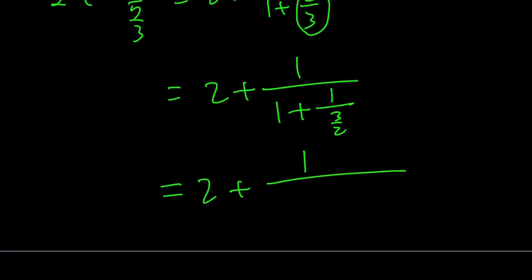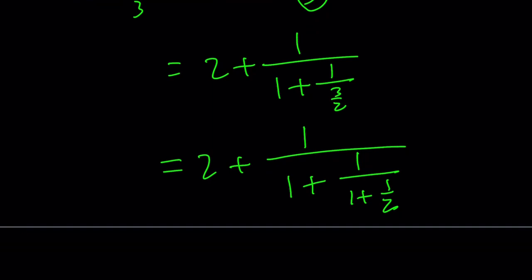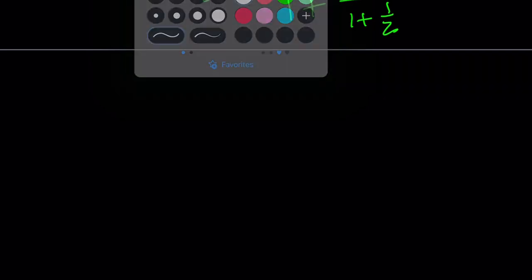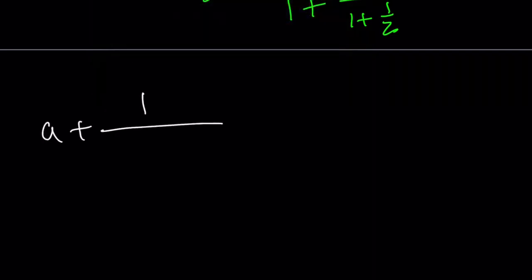Let's go ahead and manipulate this a little bit more. 3 halves can be written as 1 plus 1 half. And I got 1, 2, 3 fraction bars. And I got the something plus 1 over something, 1 plus 1 over something, so on and so forth. So I got the same structure. So let's go ahead and write our original equation.